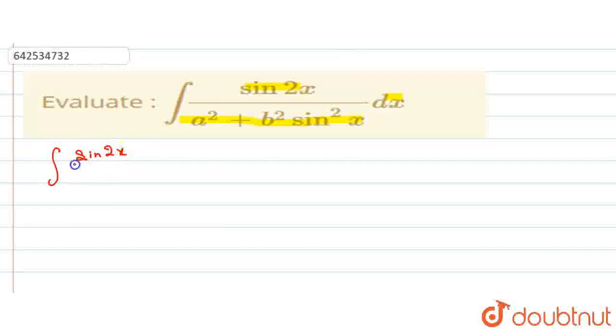Sin 2x divided by a squared plus b squared sin squared x into dx.